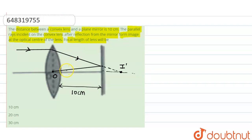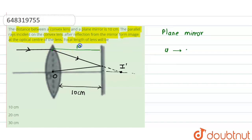For a plane mirror, if u is the object distance, then the mirror forms the image behind it at the same distance — object distance and image distance are equal. Here, the rays are coming from 10 centimeters away, so this distance is 10 centimeters. The image formed by the plane mirror is also at the same distance, so that distance is also 10 centimeters.